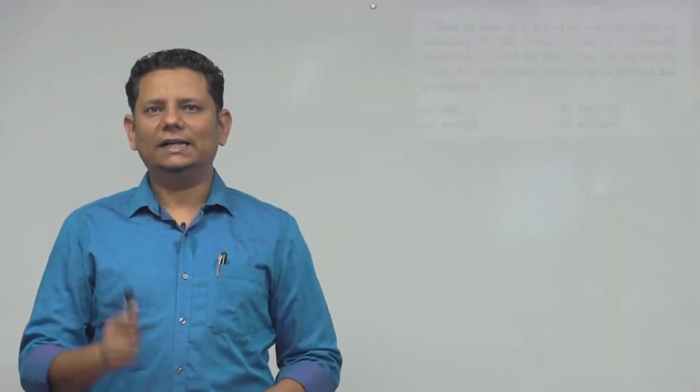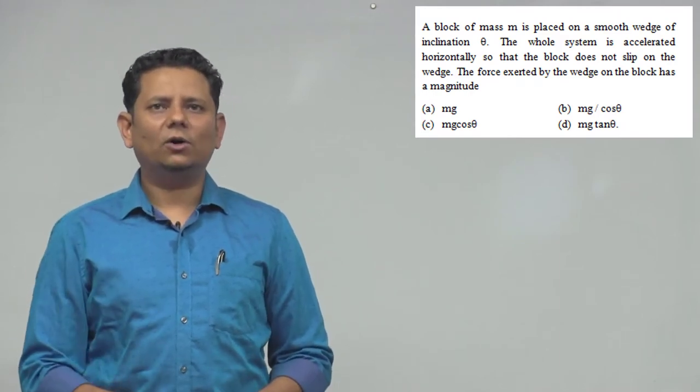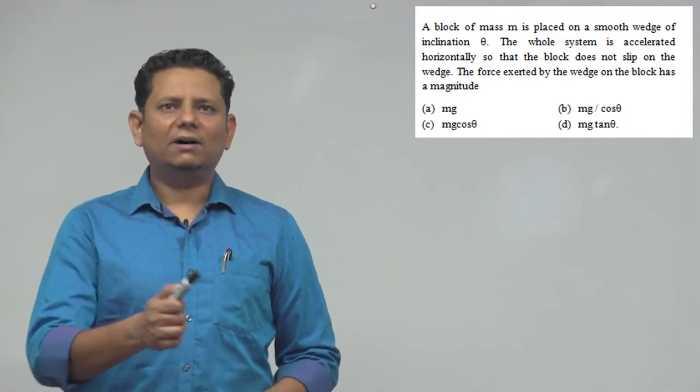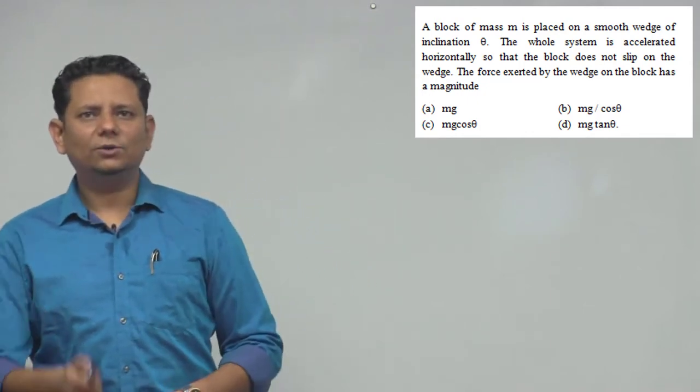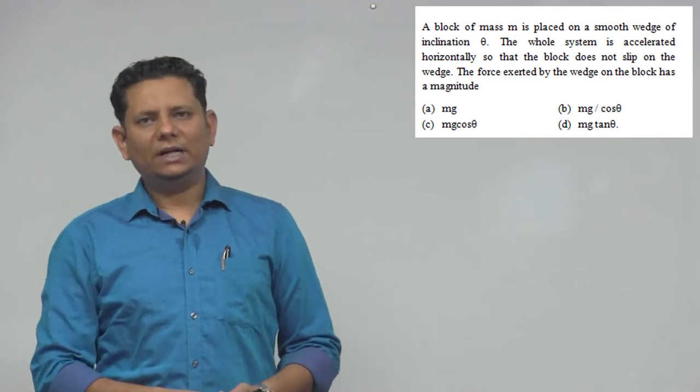The question says: a block of mass m is placed on a smooth wedge of inclination theta. The whole system is accelerated horizontally so that the block does not slip on the wedge. Find the force exerted by the wedge on the block. The options are: mg, mg by cos theta, mg cos theta, or mg tan theta.